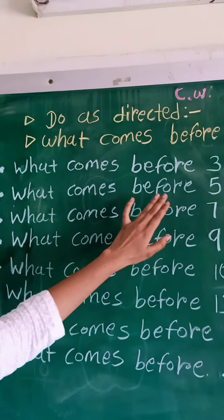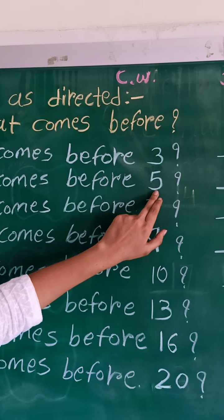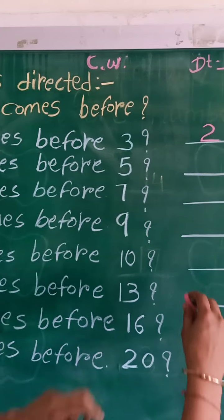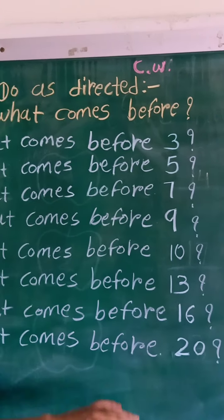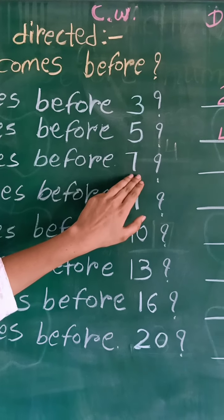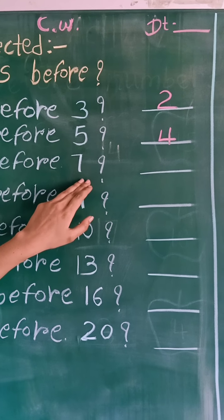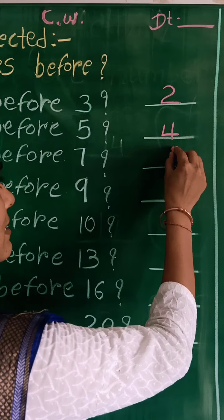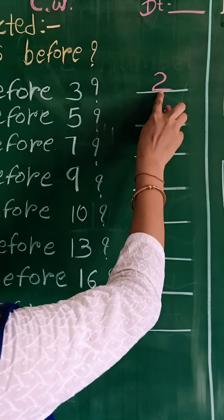What comes before 5? We speak 1, 2, 3, 4, 5. Which number we speak before 5? Number 4. Next one — what comes before 7? 1, 2, 3, 4, 5, 6, 7. Which number we speak before 7? Number 6.